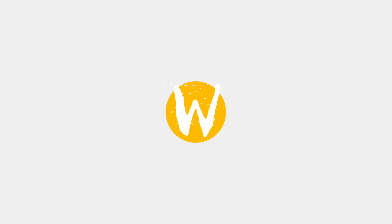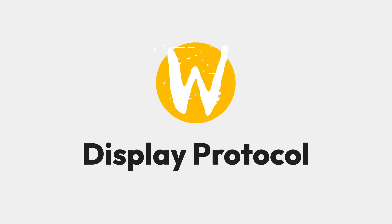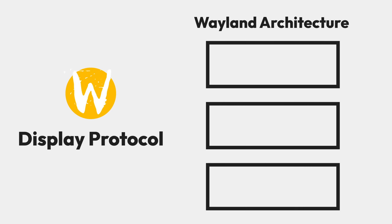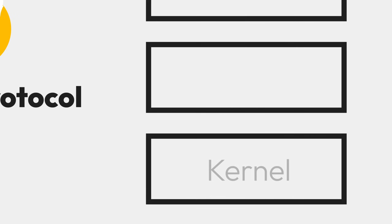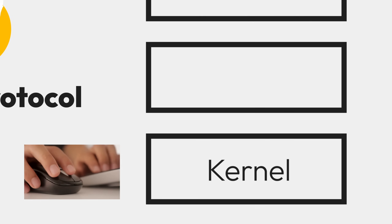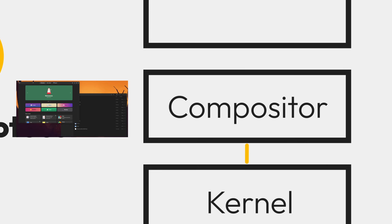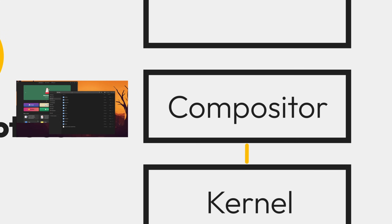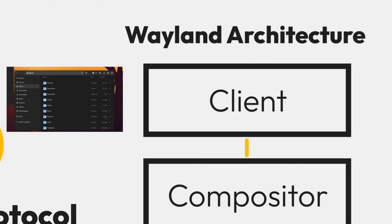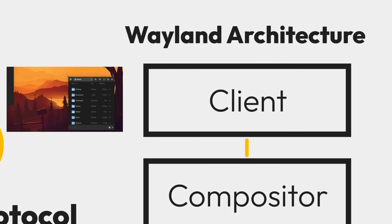Quick little recap: Wayland is a display protocol that consists of three parts. You have the kernel that collects events like moving a mouse, a compositor which determines and composites what elements on screen are affected, and a client which represents an application.